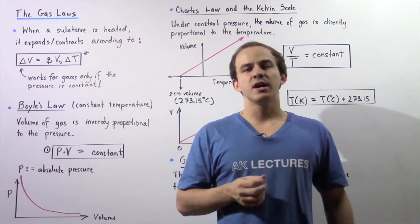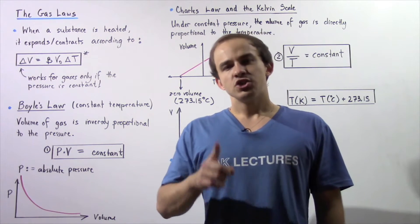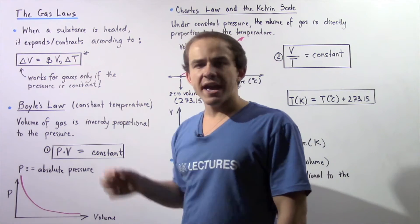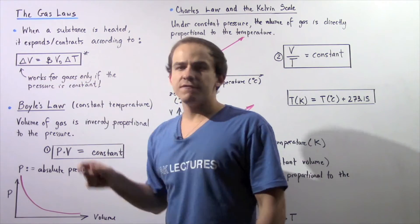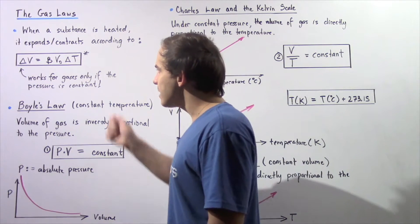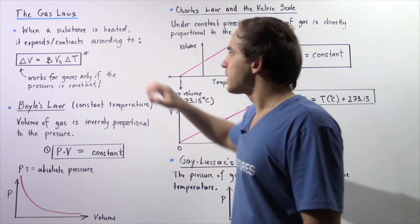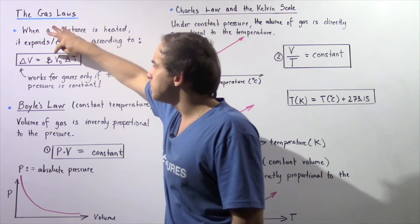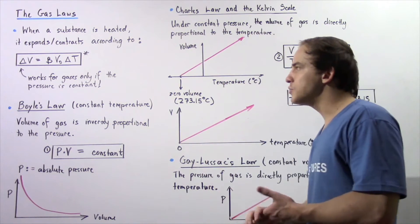In the previous several lectures we discussed thermal expansion of solid objects and fluid substances. Recall that we said when a substance is heated or cooled, it expands or contracts according to the following equation. The change in volume of our solid object or fluid substance is equal to the product of the change in temperature multiplied by the initial volume multiplied by the coefficient of thermal volume expansion of that object.